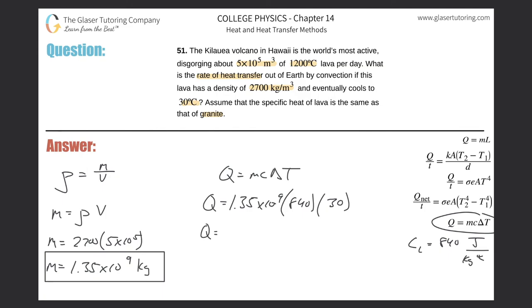So we can simply solve this now. Multiply by 840 times 30, and we get 3.4... zero if you want... I don't know, three, six... whatever, it doesn't matter. 3.4×10¹³.